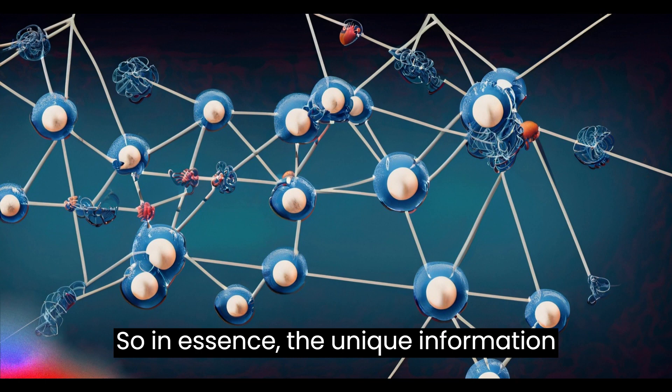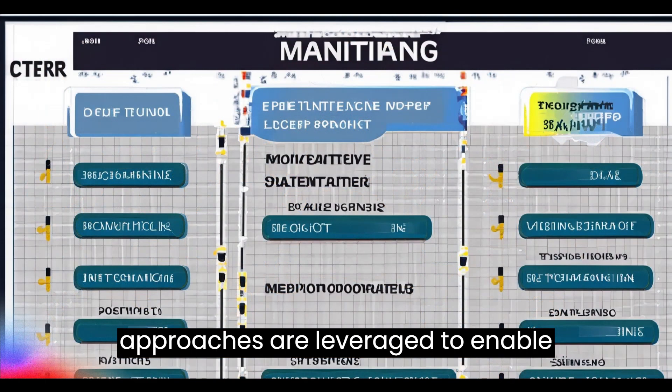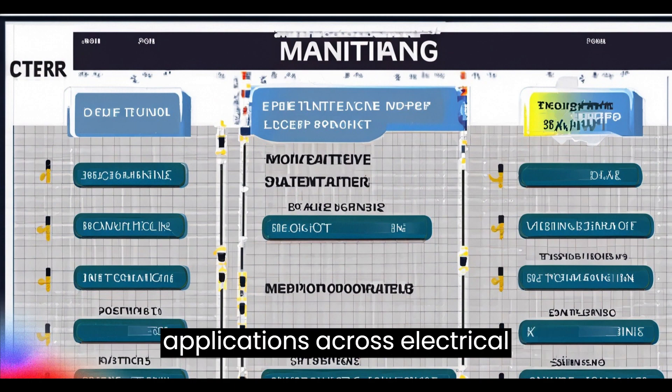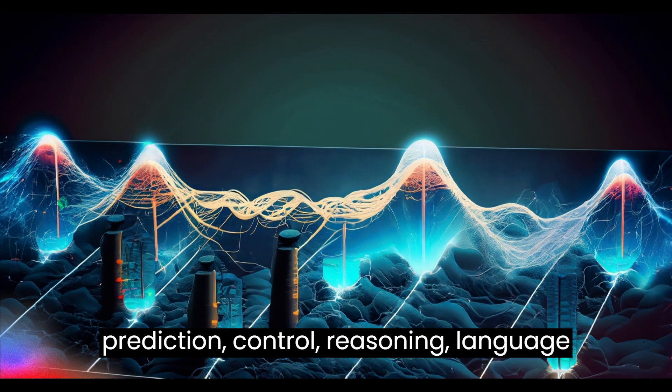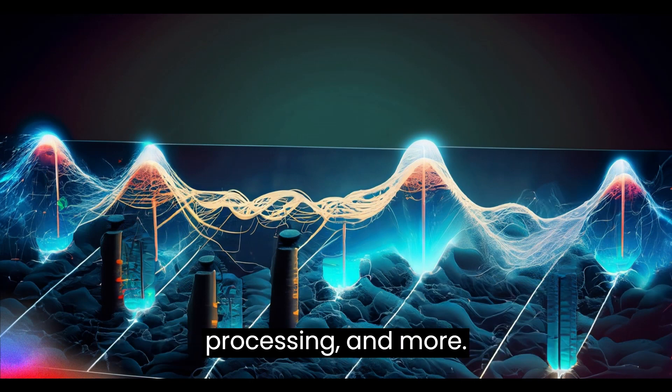So, in essence, the unique information processing capabilities of different AI approaches are leveraged to enable applications across electrical engineering that require optimization, prediction, control, reasoning, and language processing.